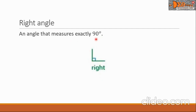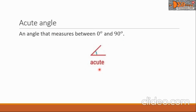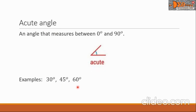The next angle is the acute angle. It is an angle that measures between 0 degrees and 90 degrees. Here is a picture of an acute angle. Some examples of acute angles are 30 degrees, 45 degrees, and 60 degrees.